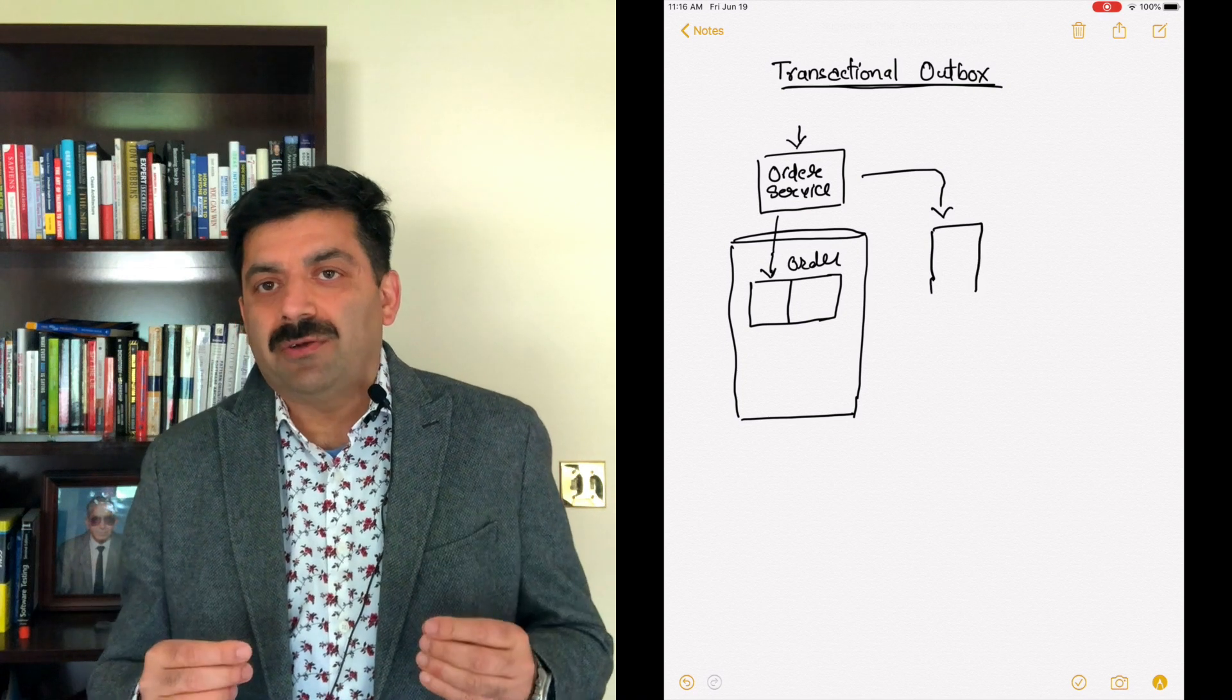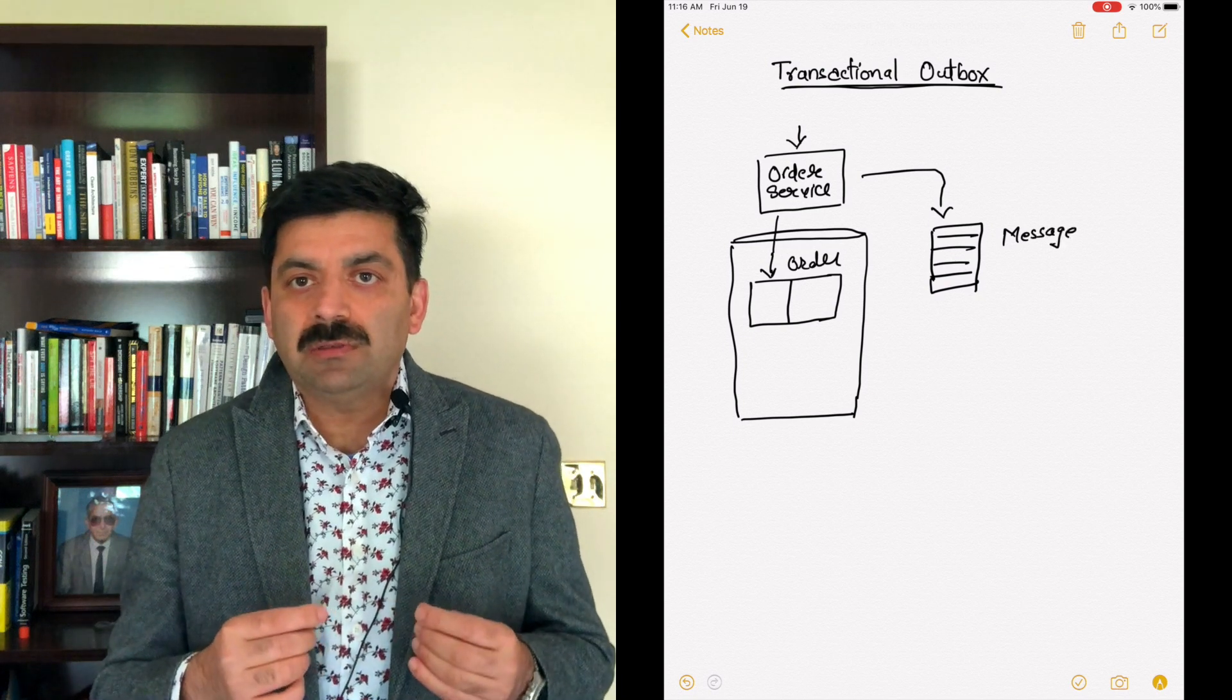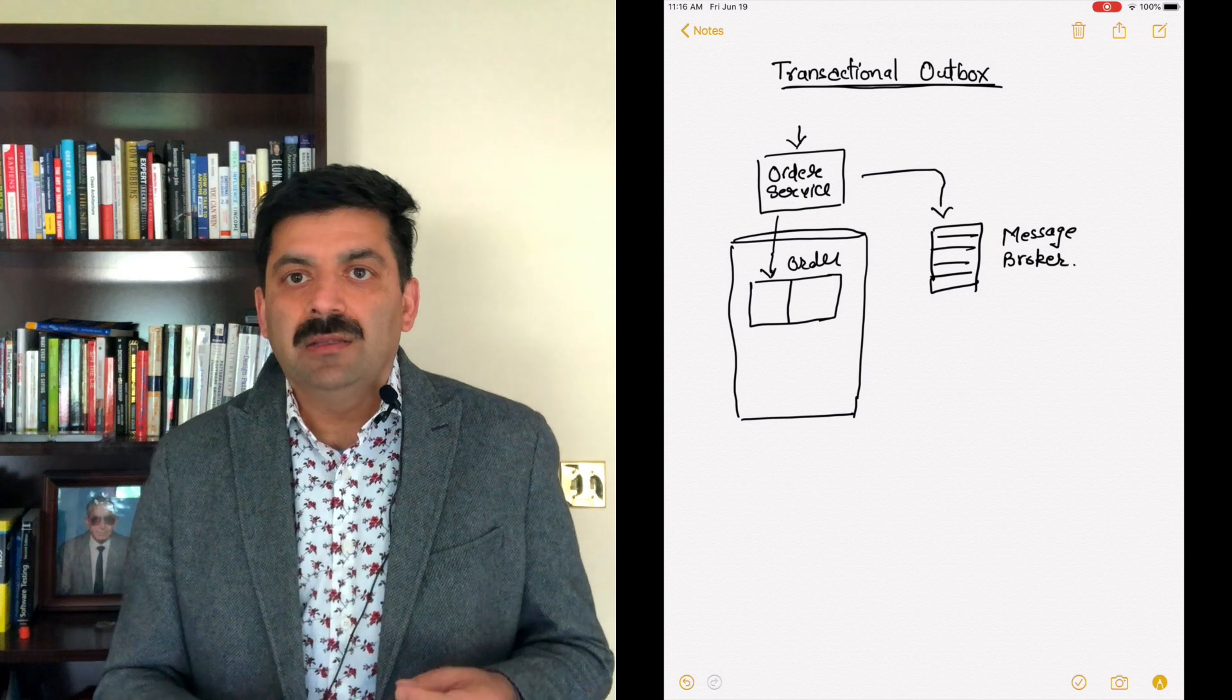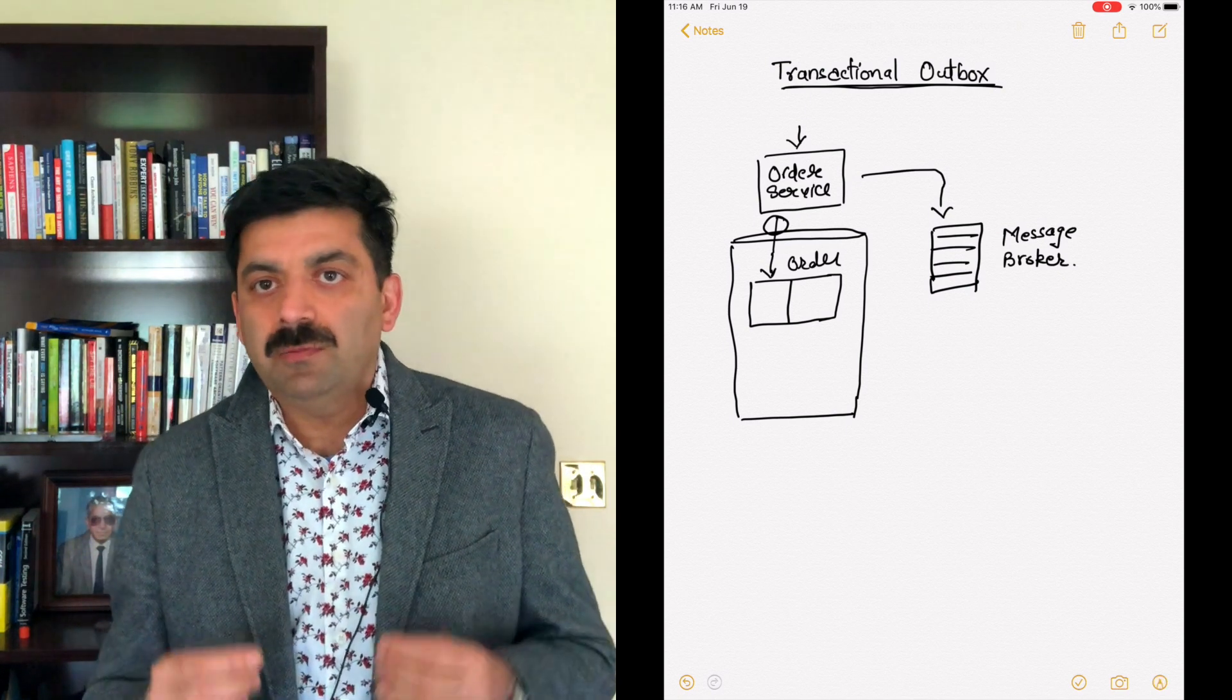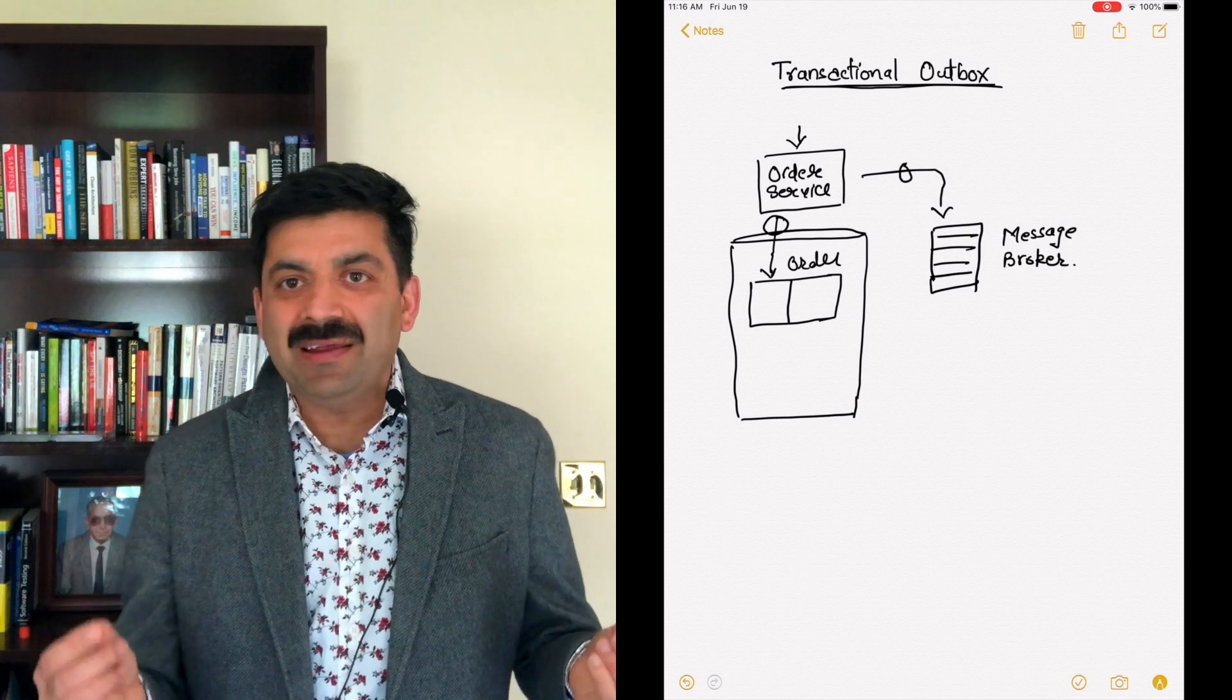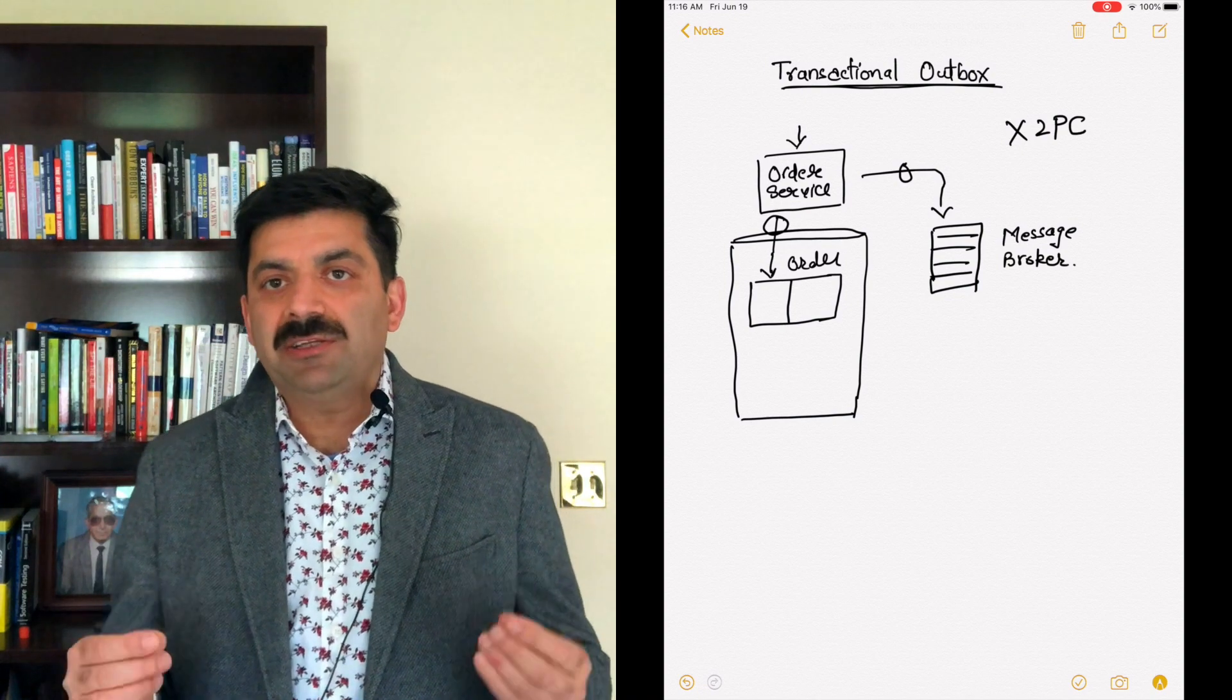Here comes the transactional outbox pattern. The same service doesn't update the record and then publish this event to an event broker. Instead, you create another table called outbox - you can give it any name. You create this table and then you write another message relay service which reads any record entered into this outbox table